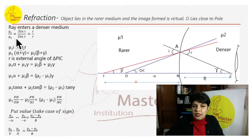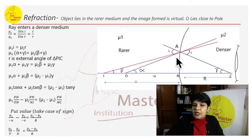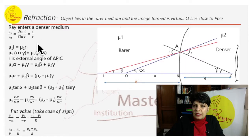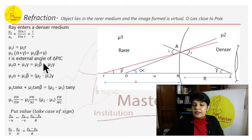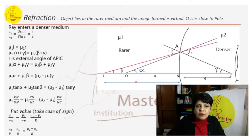From Snell's law: mu_1 over mu_2 = sine i over sine r. Angle i is between the incident ray and the normal; angle r is the refraction angle. This gives mu_1 over mu_2 = i over r, so mu_1 · i = mu_2 · r. Following the same steps as Case 1, i is expressed as alpha + gamma.